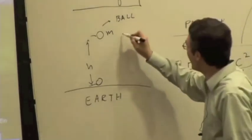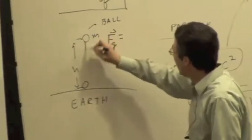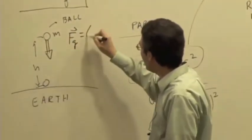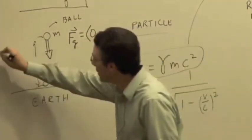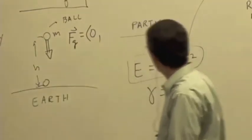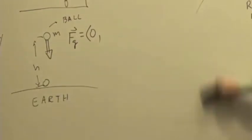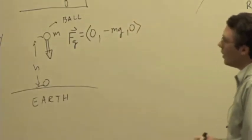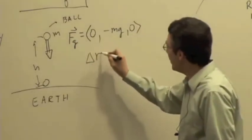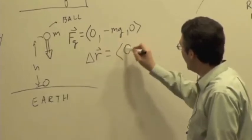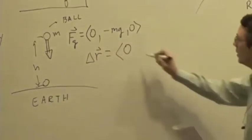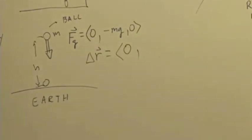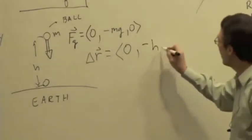What force is acting on the ball? Gravity. We can write that as a vector. The gravitational force is pointing downward. We assume that this is the positive Y direction, up is positive Y. Force is going to be zero, negative mg, zero. The displacement, the change in position, is going to be zero. What's the displacement in the Y direction? Negative H, zero.